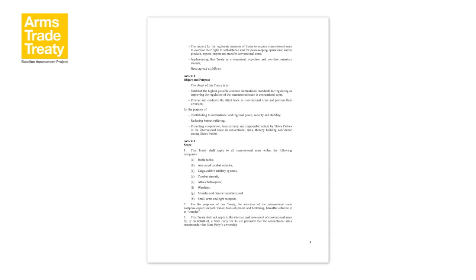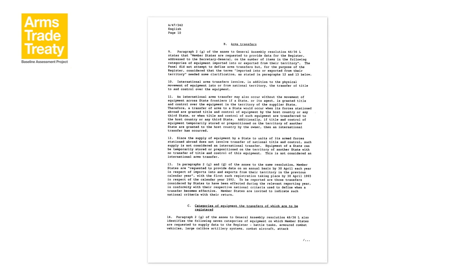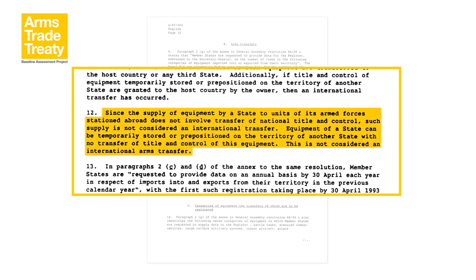The UN Register does not provide a definition for international transfers, but the 1992 report of the UN Panel of Governmental Technical Experts on the UN Register advised that international arms transfers involve, in addition to the physical movement of equipment into or from national territory, the transfer of title and control over the equipment. The ATT and the UN Register also provide some guidance about possible exceptions to activities that are considered transfers. The ATT says this treaty shall not apply to the international movement of conventional arms by, or on behalf of, a state party for its use, provided that the conventional arms remain under the state party's ownership.